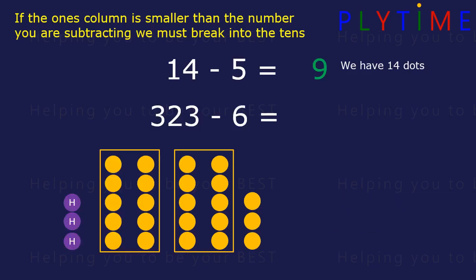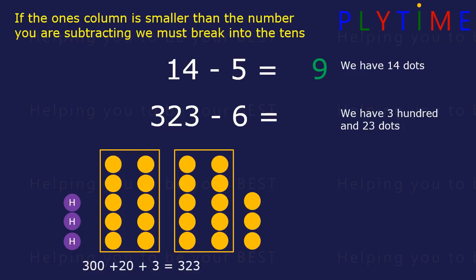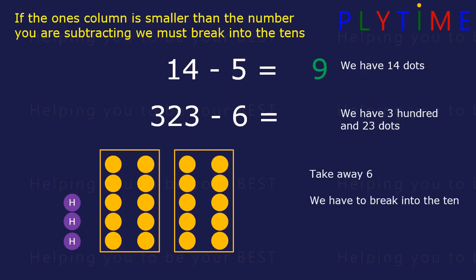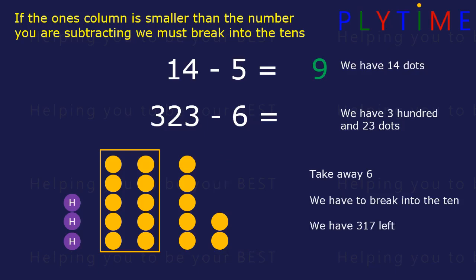What about three hundred and twenty-three minus six? Three hundred and twenty-three is three hundreds, two tens and three ones. If we take away six — one, two, three — we need to break into another ten. One, two, three more. We're left with three hundreds, one ten and seven ones, or three hundred and seventeen.